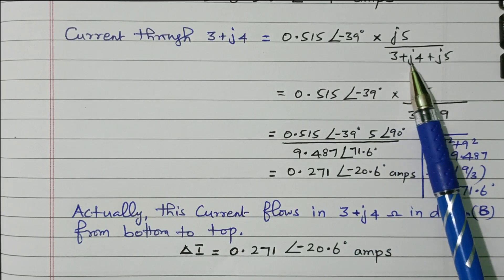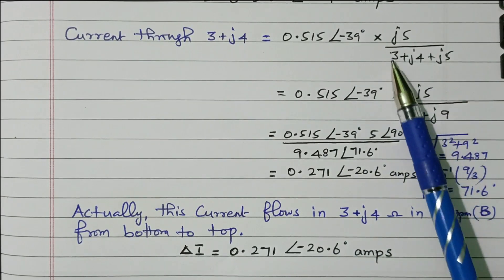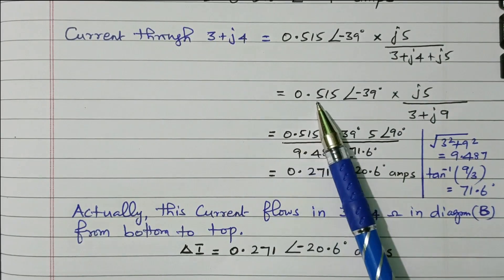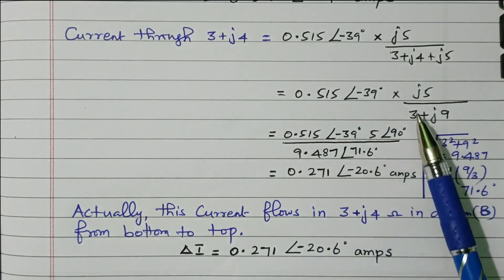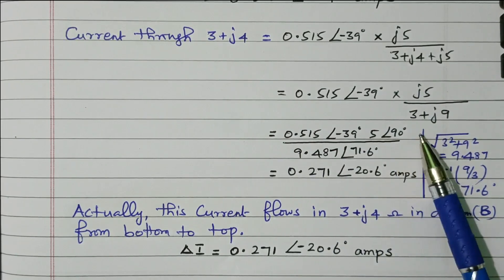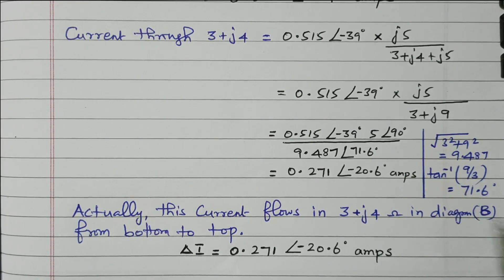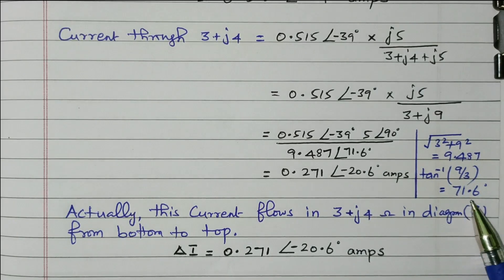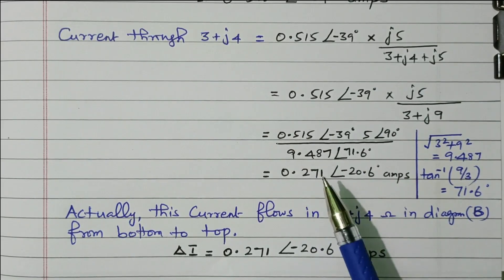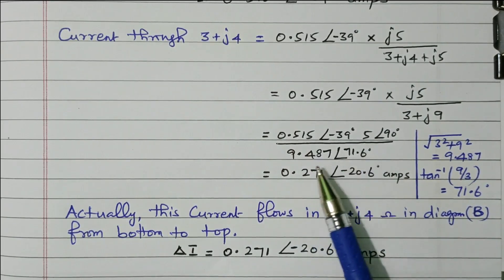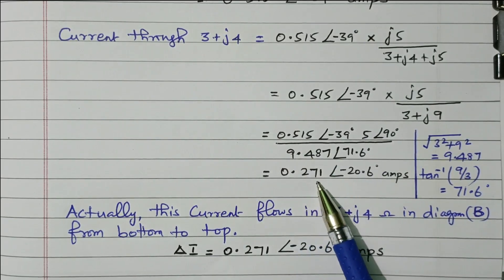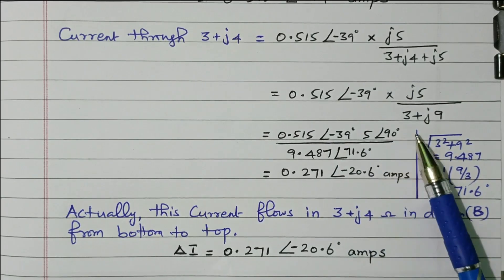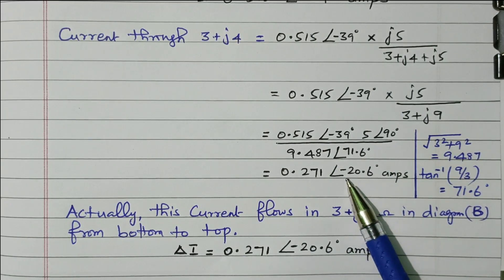The current is divided through 3 plus J4 and J5. The other branch impedance is J5 divided by total impedance of that parallel section, 3 plus J9. J5 is 5 at angle 90 degrees, and 3 plus J9 converts to 9.487 at angle 71.6 degrees. So we multiply: 0.515 into 5 divided by 9.487 equals 0.271. The angle is minus 39 plus 90 minus 71.6, which equals minus 20.6 degrees. The total current was 4.725 divided by 9.2 equals 0.515 at angle minus 23.2 minus 15.8 equals minus 39 degrees.